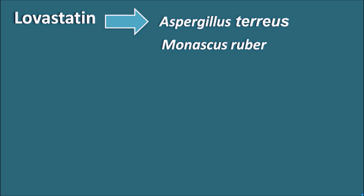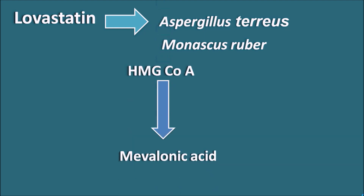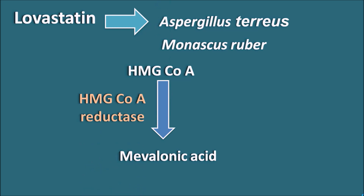This drug inhibits the biosynthesis of cholesterol within the liver. Cholesterol is biosynthesized through the mevalonic acid pathway, where HMG-CoA is converted into mevalonic acid by the important enzyme HMG-CoA reductase. This enzyme is the rate-limiting enzyme, so when it is inhibited, cholesterol biosynthesis is inhibited within the liver. Lovastatin inhibits this HMG-CoA reductase enzyme, thereby controlling cholesterol biosynthesis.